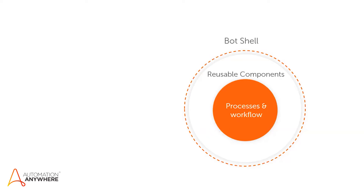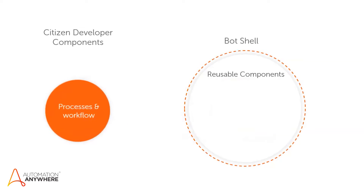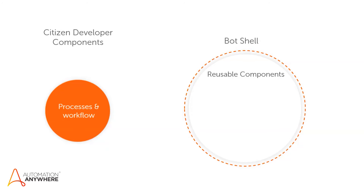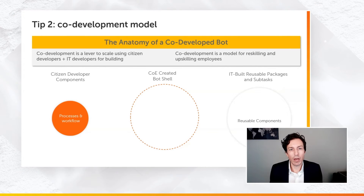If we break this up to see the anatomy of who's developing what: the citizen developer is primarily responsible for automating the process and the workflow itself — they're the most familiar with it, so we'd expect them to do most of the development work on that specific process. IT resources are primarily responsible for helping out with those reusable packages and subtasks. And then finally, we have the COE-created bot shell, which is the wrapper for everything else that everyone uses for their bot builds.